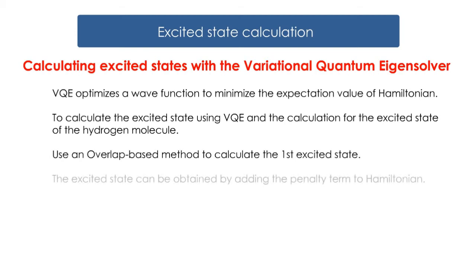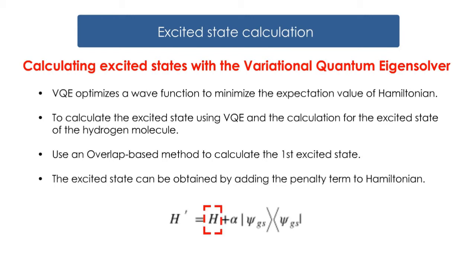This method uses a penalty term for the overlap between the wave functions from VQE and the ground state. The excited state can be obtained by adding the penalty term to Hamiltonian. The equation is as follows: The H on the right side is the original Hamiltonian. The second term on the right side evaluates the value of the overlap with the ground state wave function psi_gs, which is obtained by a classical calculation, but it is also possible to use VQE. Alpha in the second term is a parameter that represents a penalty and we take a large enough value. By adding the penalty term to the original H term, we define H' on the left side.